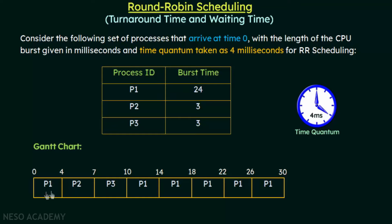When P1 was preempted after its first 4 milliseconds, it was put at the end of the queue, so the queue looked like P2, P3, P1. When P3 completes, P1 is still waiting. So P1 gets the CPU again at 10 milliseconds and executes for another 4 milliseconds, from 10 to 14. P1 has now executed 8 milliseconds total, with 16 milliseconds remaining, so at 14 milliseconds P1 is preempted again.